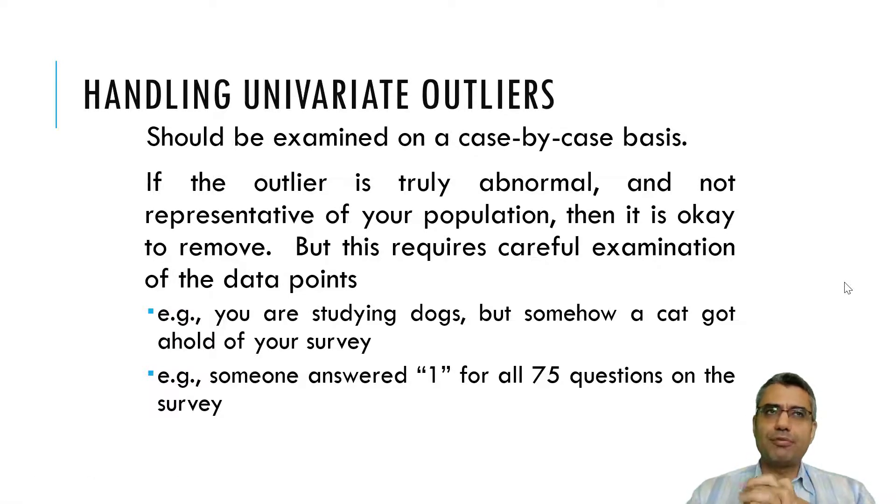Now how to handle univariate outliers. So first of all, our main concern here in SEM and maximum likelihood algorithm or estimation method is multivariate outliers. But univariate outliers are important too because first of all, maybe they are different from our population. Secondly, they impact multivariate normality, which is one of the assumptions for SEM, for maximum likelihood estimation method in SEM.